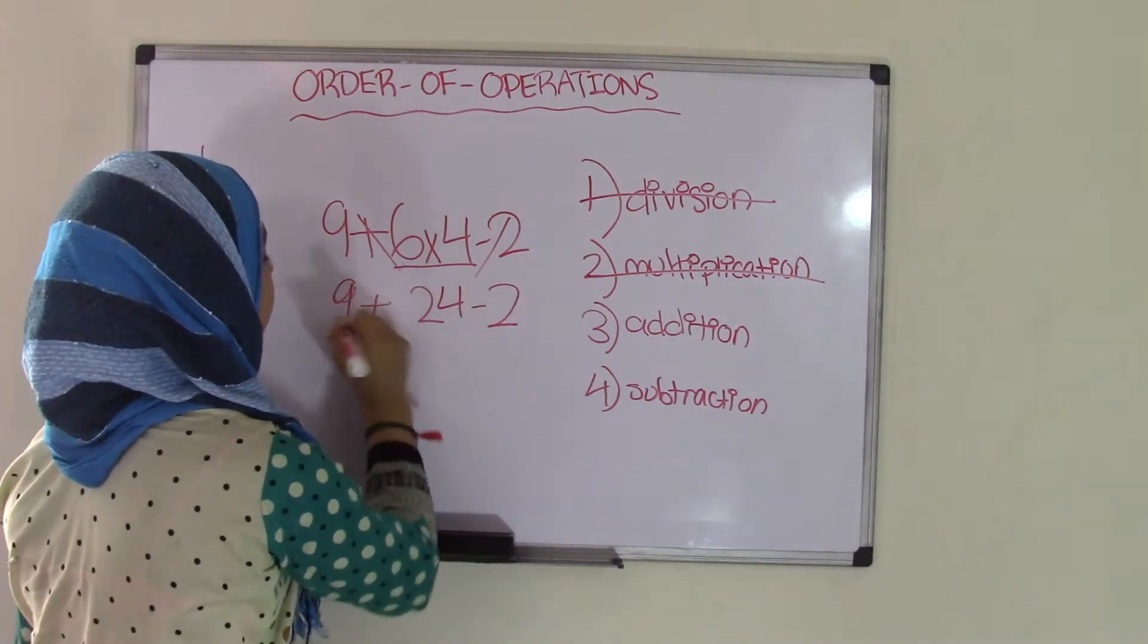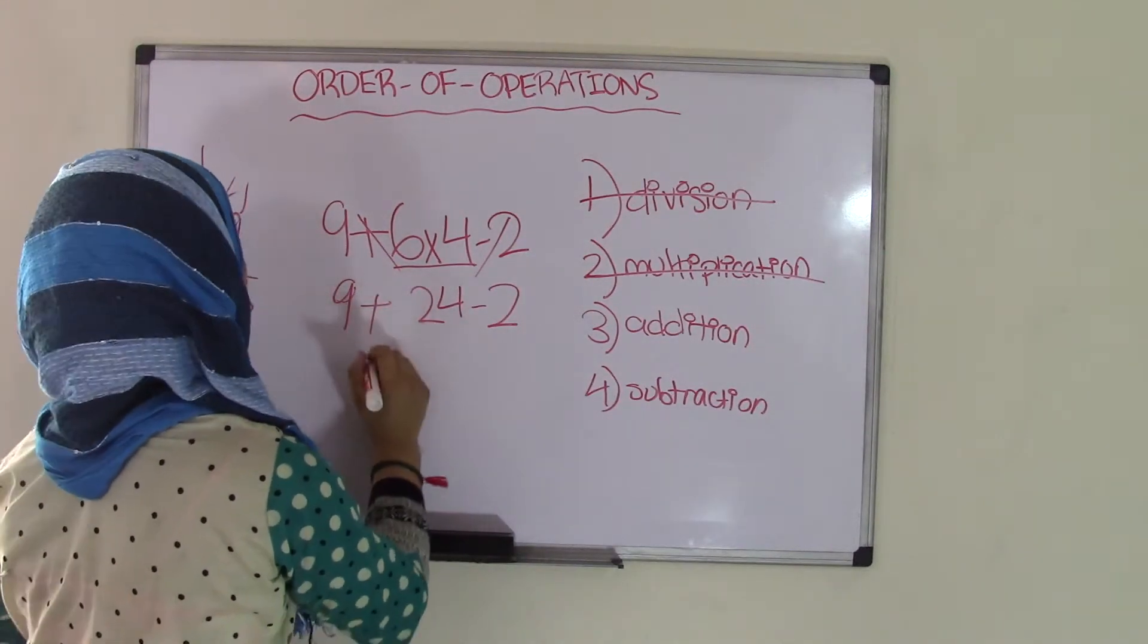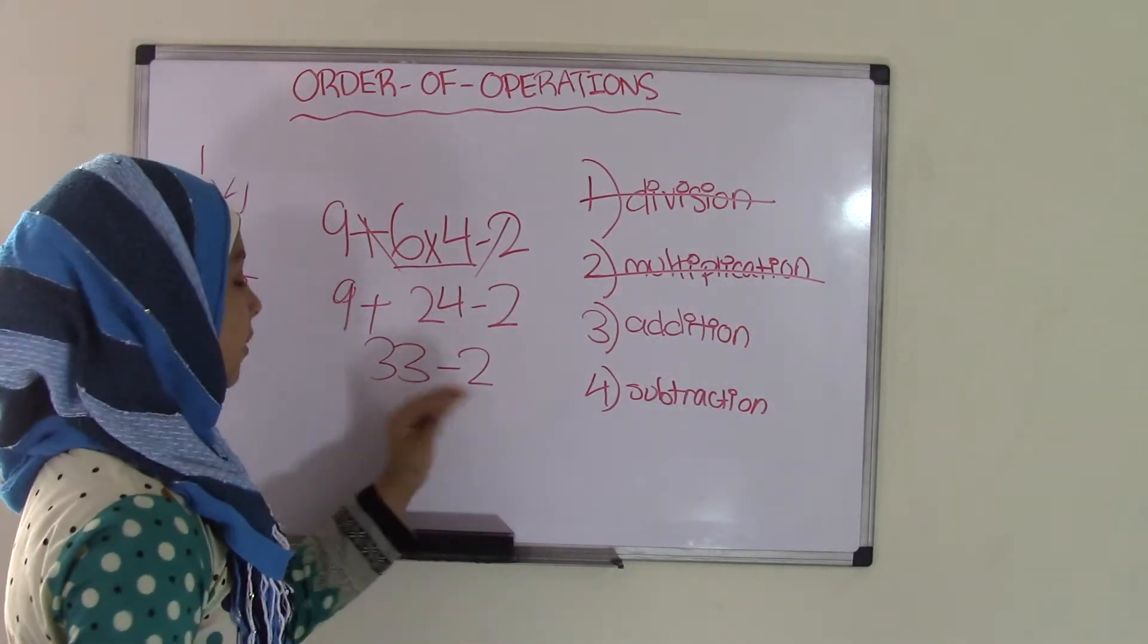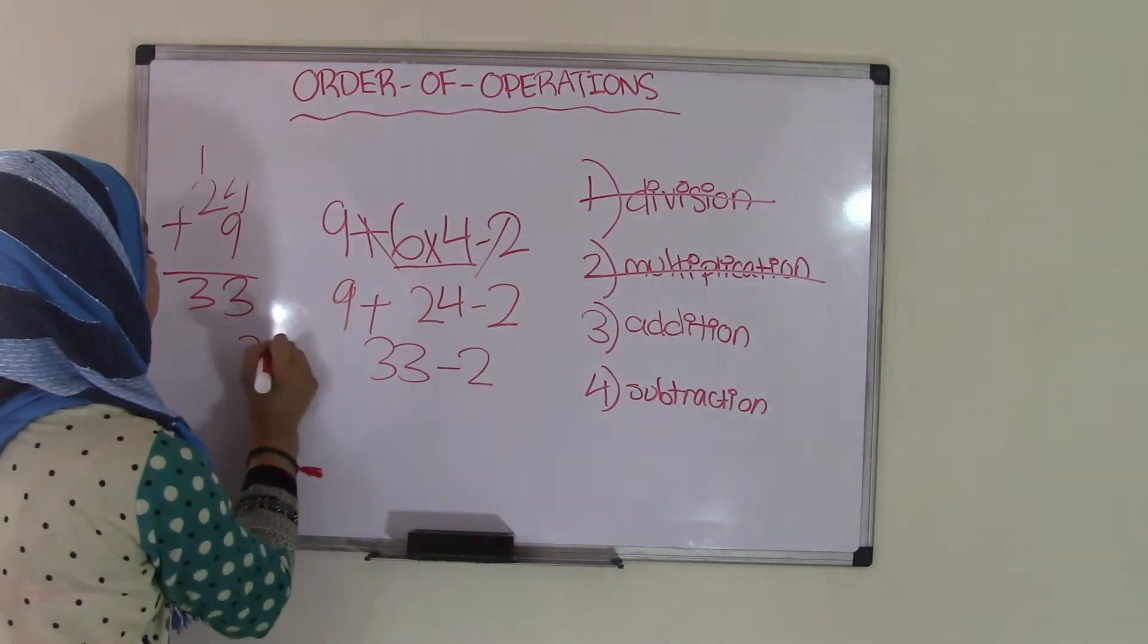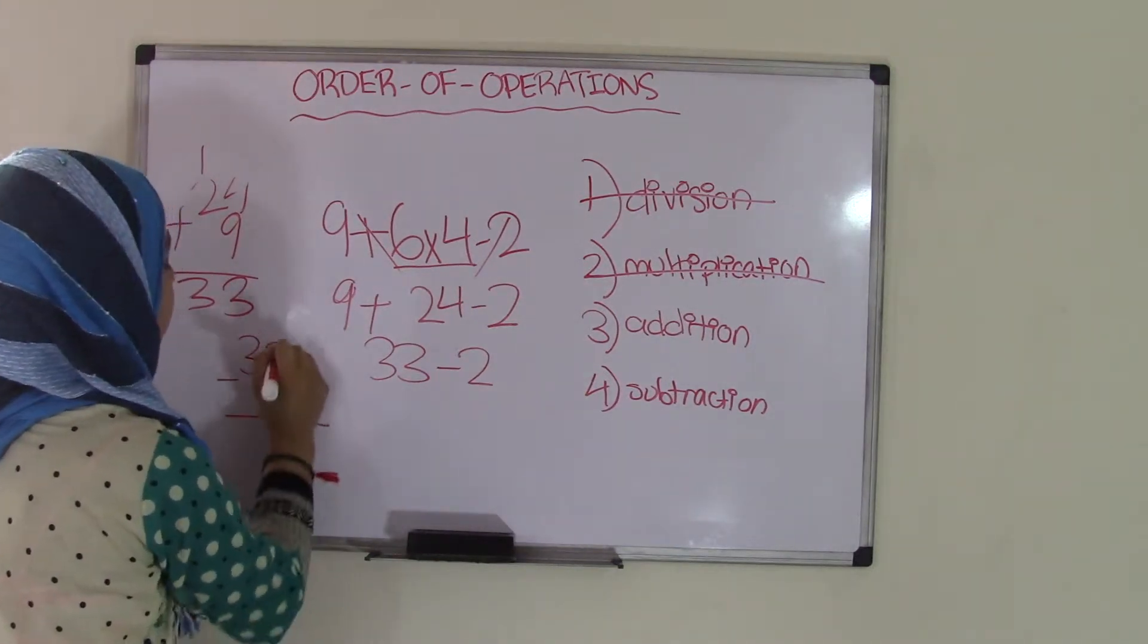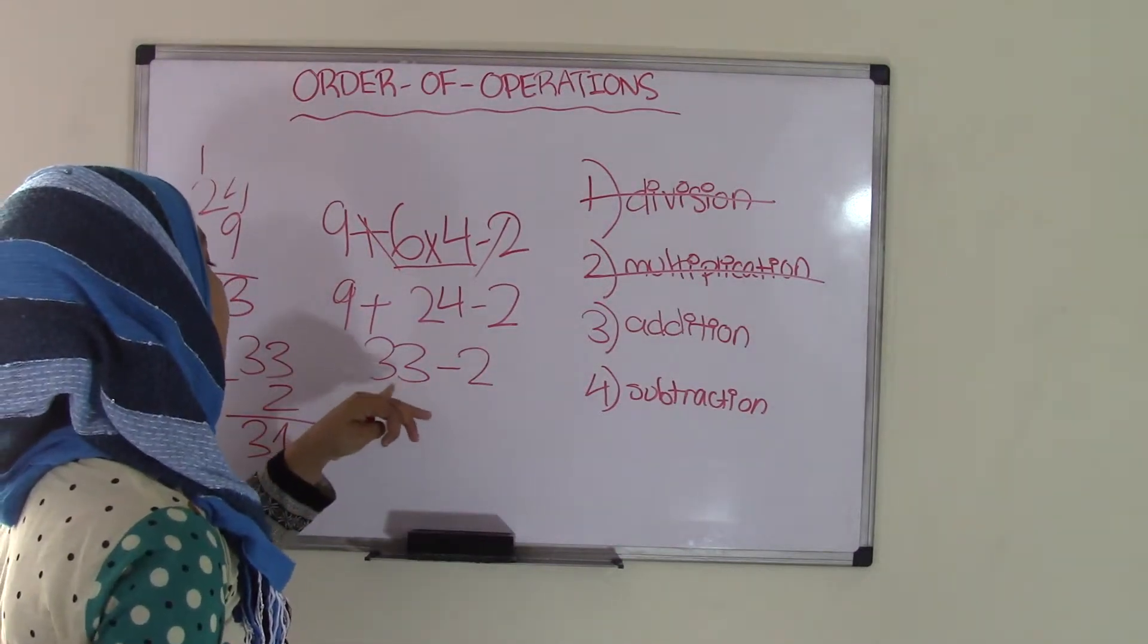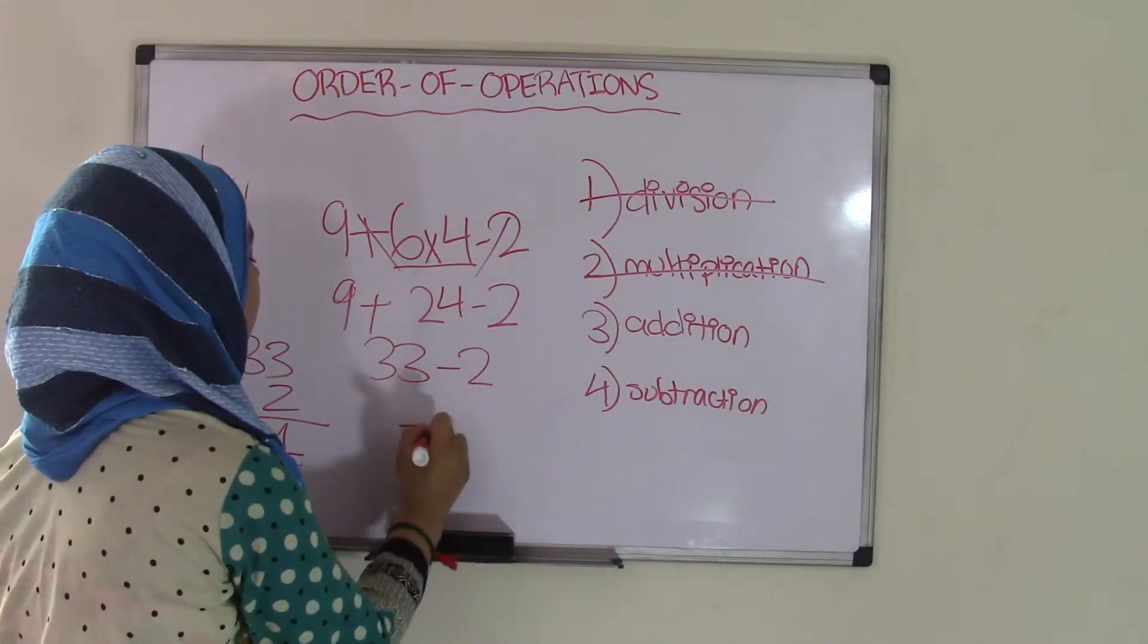So what we're going to do is we're going to simplify 9 plus 24 to 33, and then bring down the minus 2. So now we have 33 minus 2. And we know that 33 minus 2 is 3 minus 2 is 1, and the 3. So that means the difference of 33 minus 2 is equal to 31.